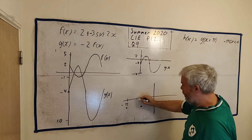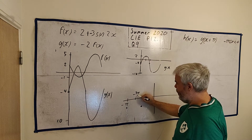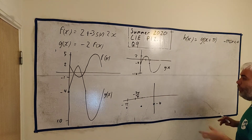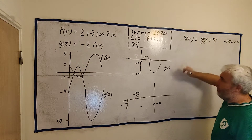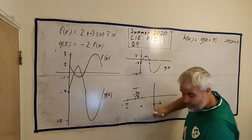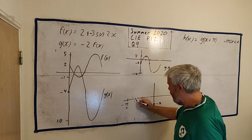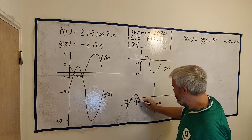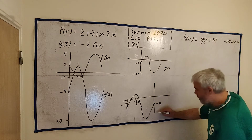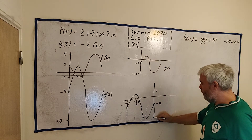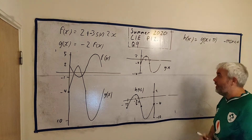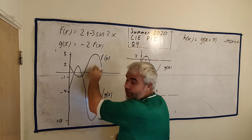Halfway between is minus 3pi over 4. If I put this in I get pi over 4, which gives me 2. So h(x) goes down to minus 10, just like g(x) had the same amplitude. That's what h(x) looks like — and here are all three together: h(x), g(x), and f(x). The final answer — the thing most students didn't know how to describe — is how to get from f(x) to h(x).